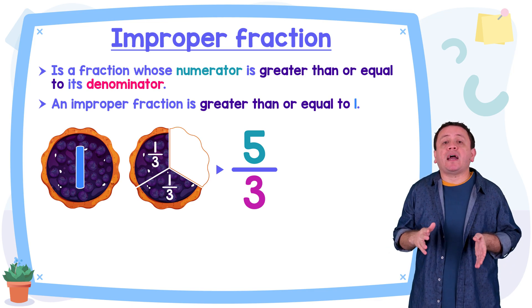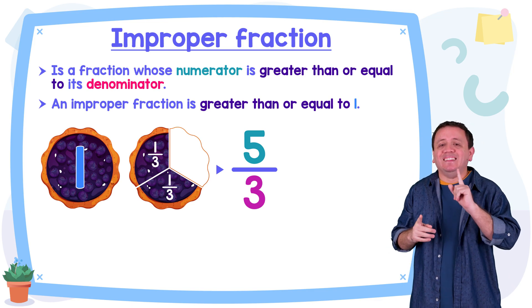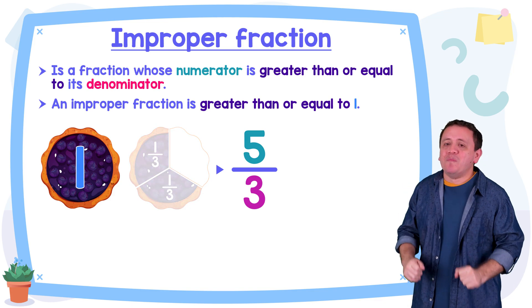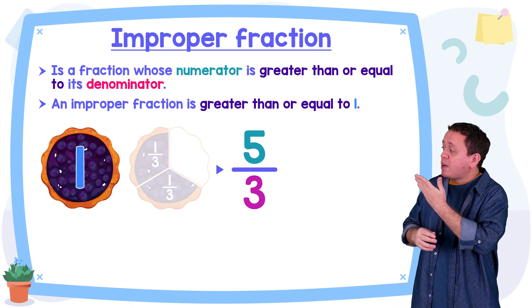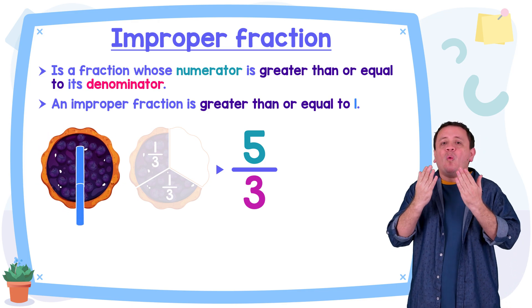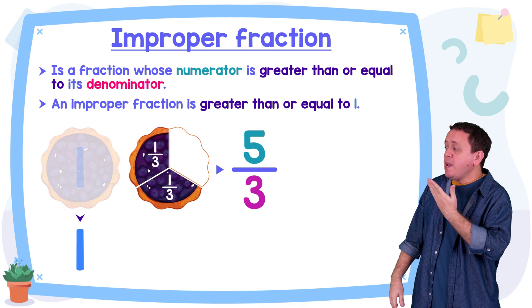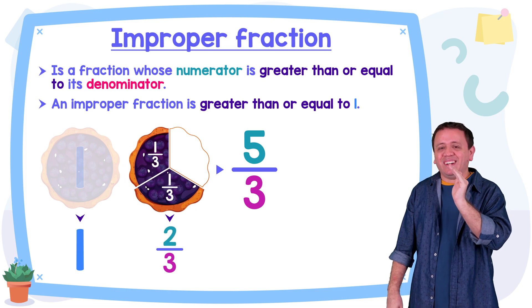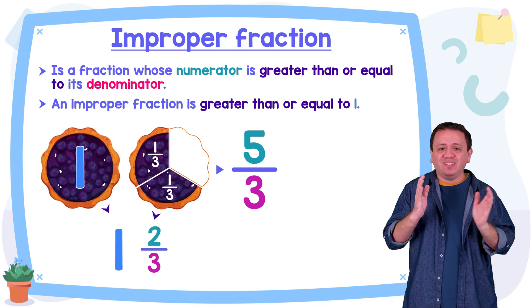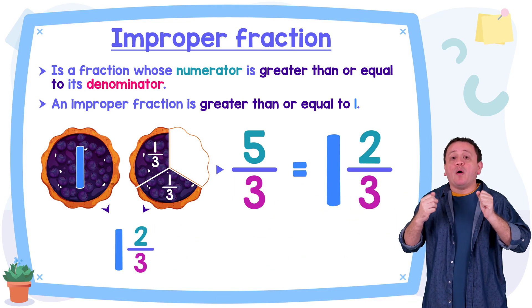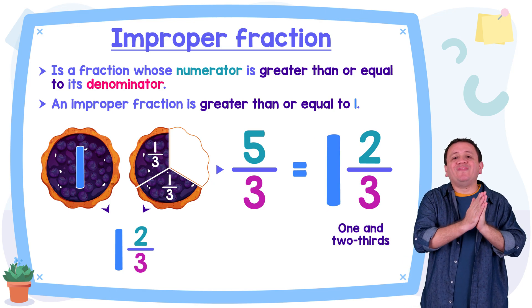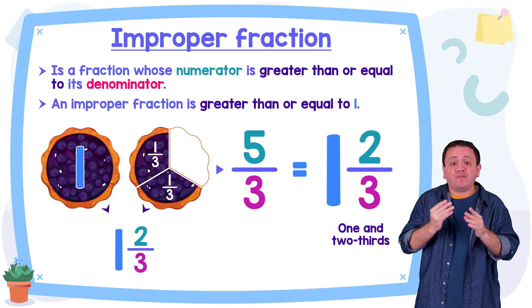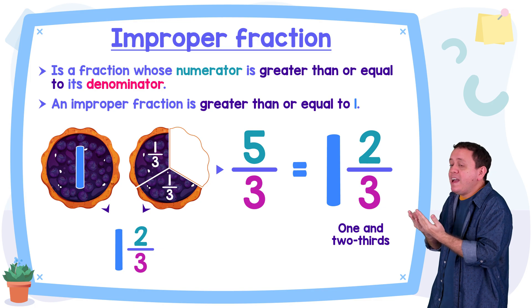An improper fraction can be written as a mixed number or a whole number. We are going to rewrite our improper fraction five thirds as a mixed number. We took the first pie completely — one whole. But we also have a little of the second pie: one third and two thirds. So we have one whole and two thirds. Our improper fraction five thirds is equal to the mixed number one and two thirds. Don't forget that a mixed number contains a whole number and a fraction.